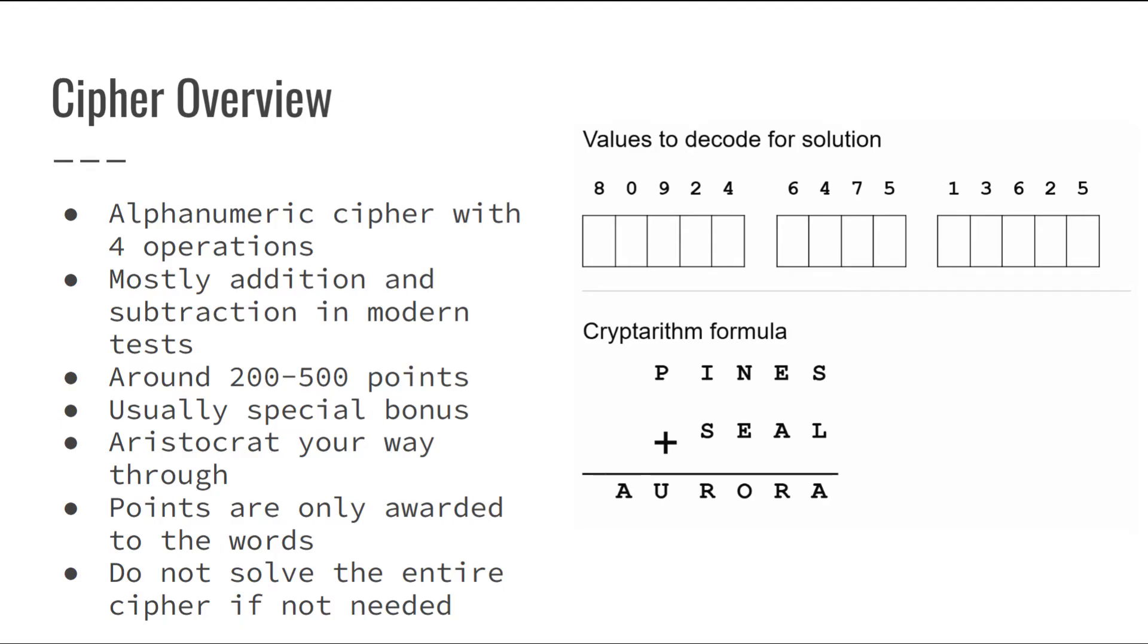Alright, so getting started with our lesson, a cryptarithm is pretty much an equation full of variables instead of numbers. Each of these variables represent a different number to create a code that the cipher is asking you for. This makes it an alphanumeric cipher with four different operations which are multiplication, division, addition, and subtraction.